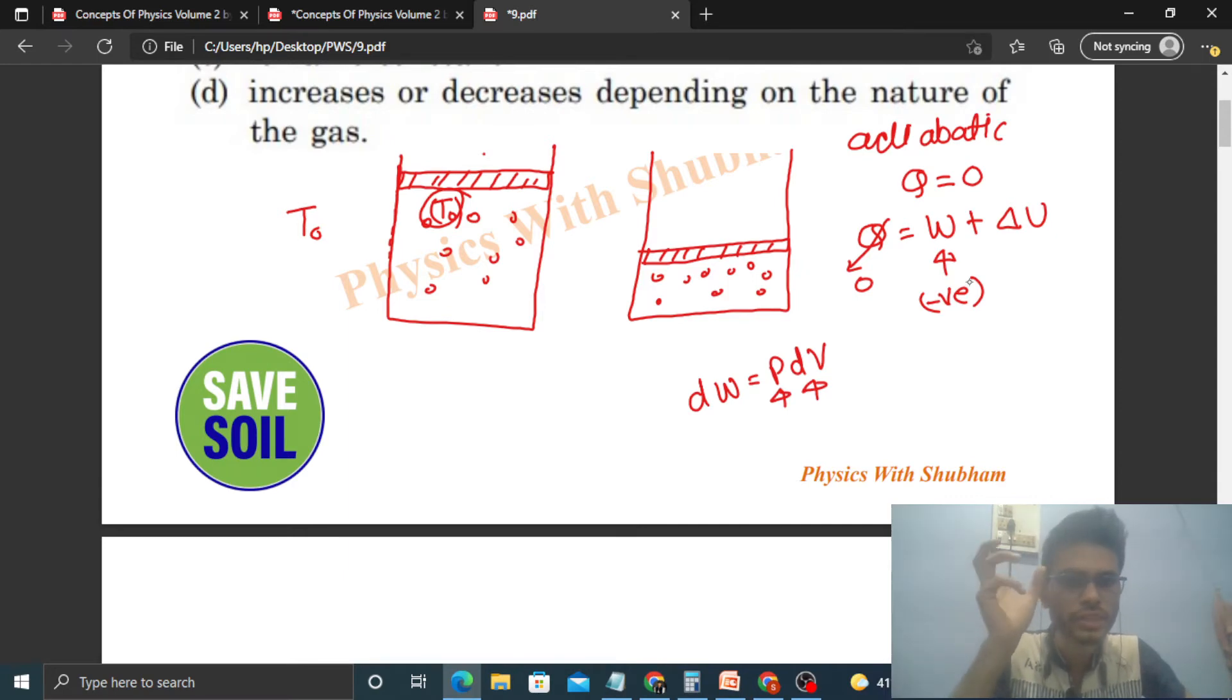So pressure is a positive quantity. If the volume dV is negative, it means the volume is decreasing, then the work will be negative. It means, you see, if work is negative then ΔU will be positive, right? Because W + ΔU = 0. So if work is negative then the change in internal energy is positive.